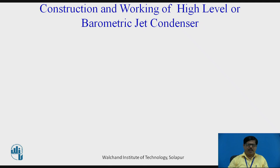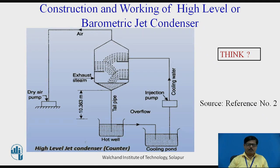Now let us see the construction and working of a high-level or barometric jet condenser. The reason it is called a barometric jet condenser is related to barometric pressure. For removal of condensate, a tailpipe is used whose height from the discharge point is greater than barometric pressure — that is 10.33 meters, and practically more than 12 meters. The condensing chamber is at a much higher level compared to the discharge point, and therefore it is called a high-level or barometric jet condenser.